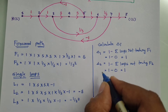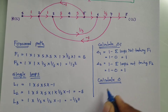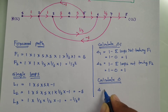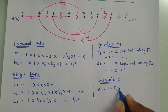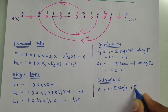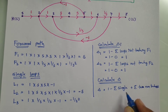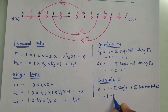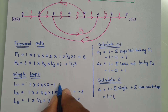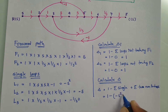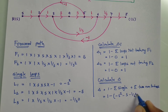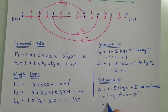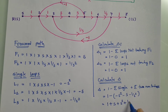Now we calculate delta. The formula is: delta = 1 − (sum of single loops) + (sum of two non-touching loops) − (sum of three non-touching loops). We only have single loops, so delta = 1 − (−S²) − (−S) − (−1/S²) = 1 + S + S² + 1/S². Simplifying with LCM S²: delta = (S⁴ + S³ + S² + 1) / S².